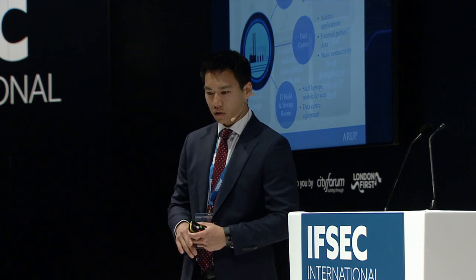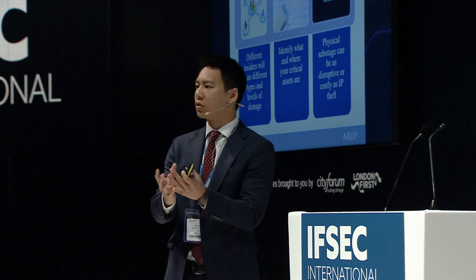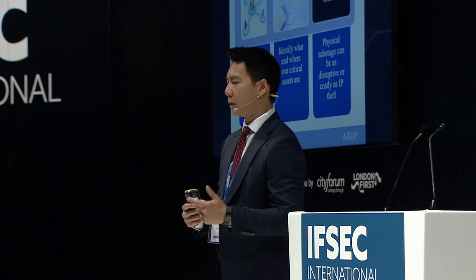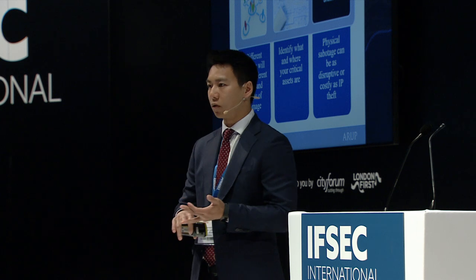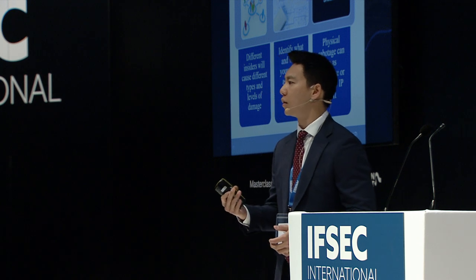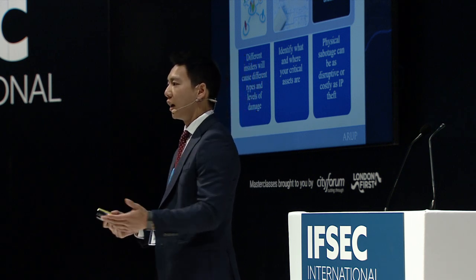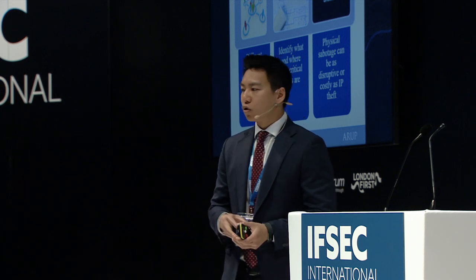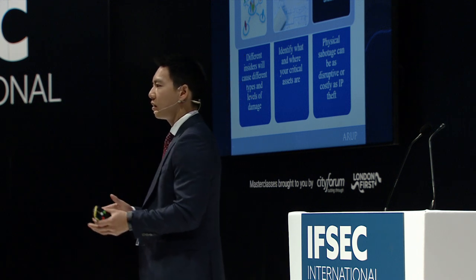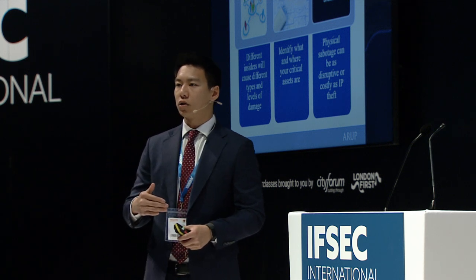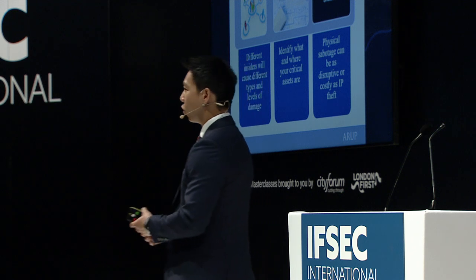If you take anything away from today, here are three points. First, try not to lump all insiders together — breaking them down into different user groups helps you understand they possess different levels of knowledge and could potentially cause different types of harm to different critical assets. Second, learn more about where and what your critical assets are, because insiders are more likely to target those. Third, while IP will always be a focus, try to also think about physical sabotage and the potential impact on your business, which as the case studies show can be very disruptive and costly.